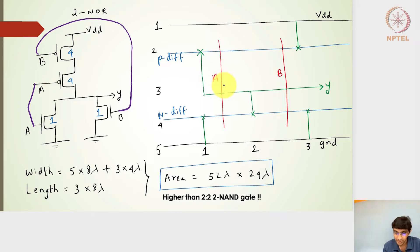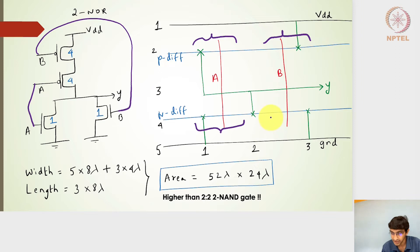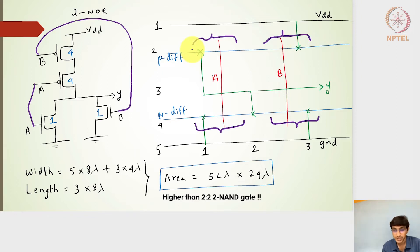Now I have a polysilicon line — a polysilicon gate A — which is cutting across the P diffusion, forming the P transistor, and then cutting across the N diffusion, forming the N transistor. Similarly, the B polysilicon gate cuts across the P diffusion side and the N diffusion side to form its respective transistors.